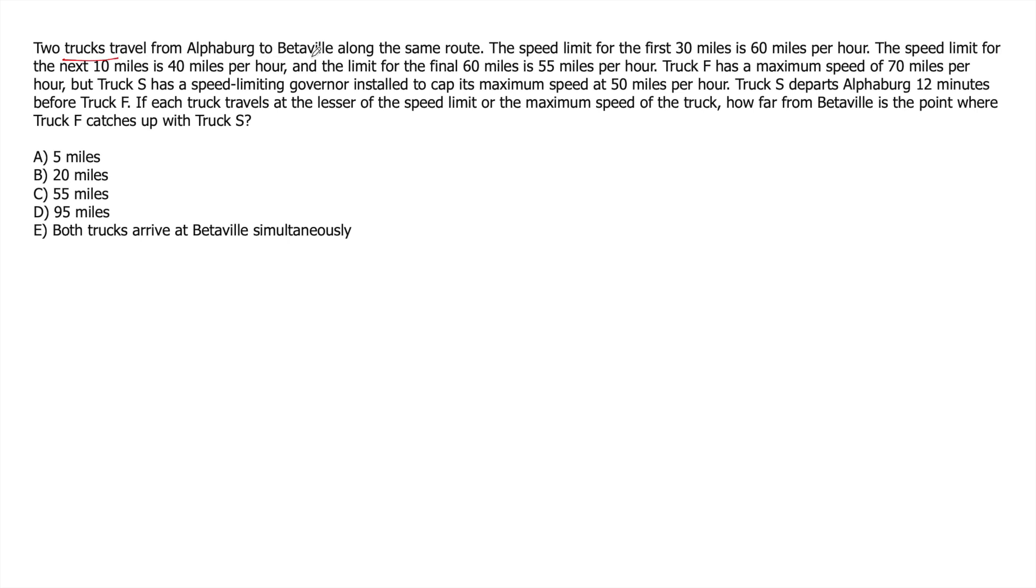Two trucks travel from Alphaberg to Betaville along the same route. Speed limit for the first 30 miles is 60 miles per hour. So let's say this is the entire route from A to B.